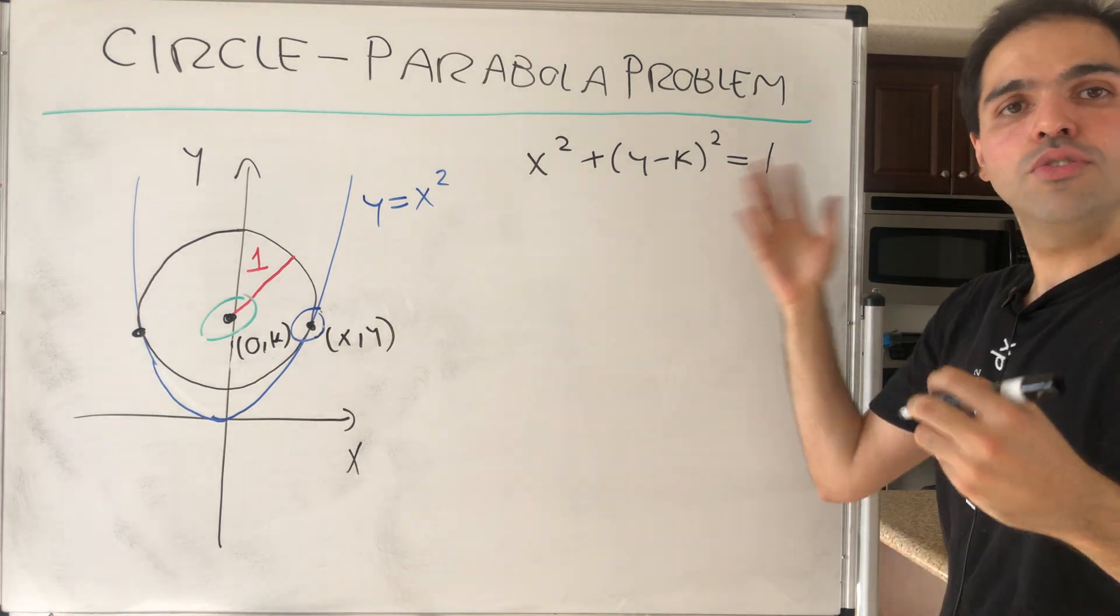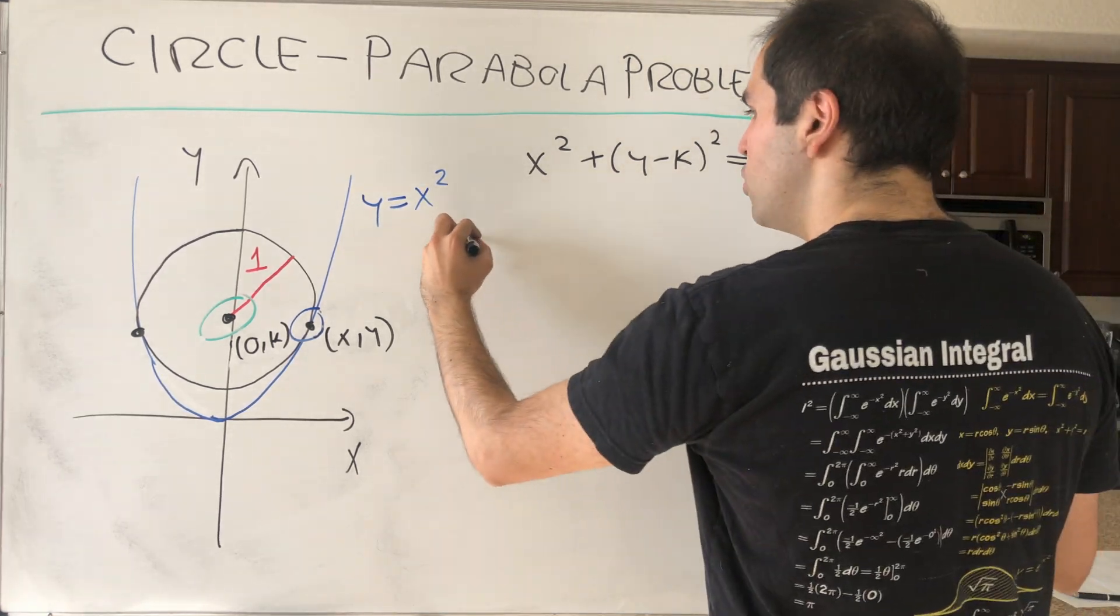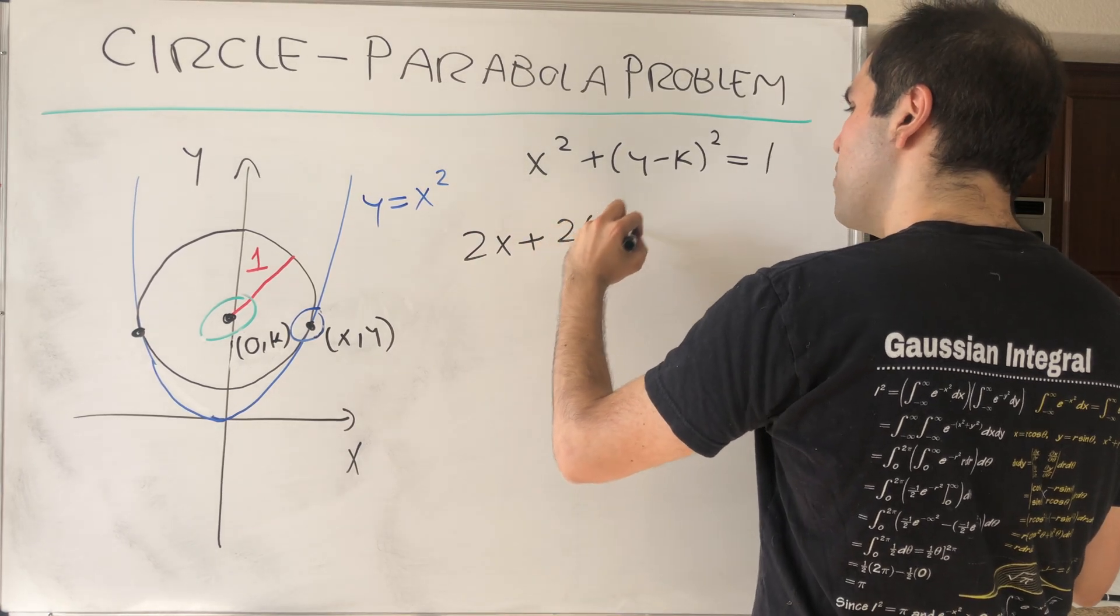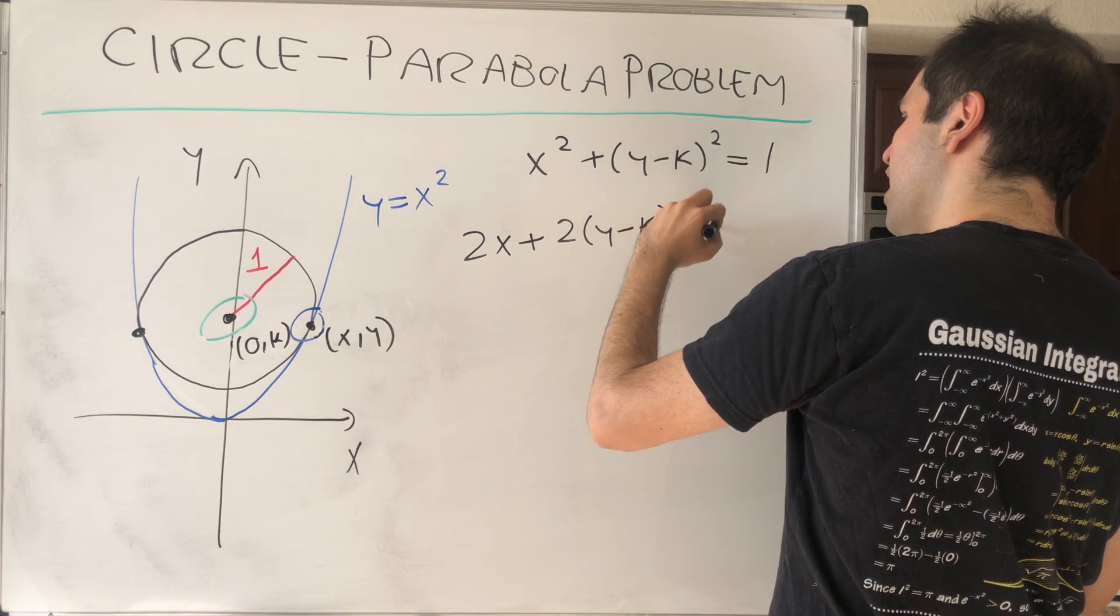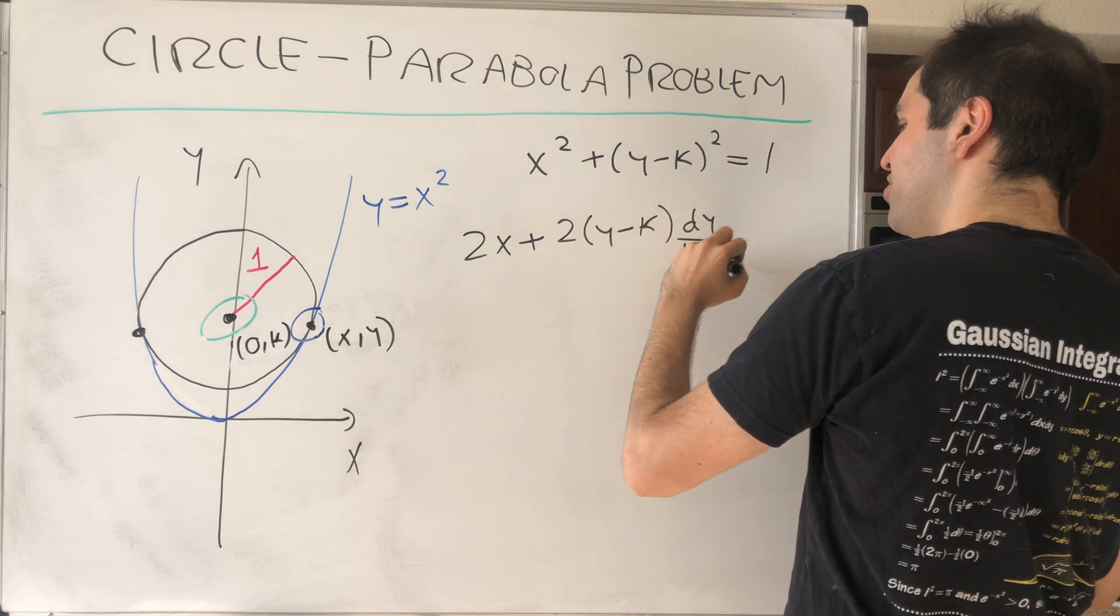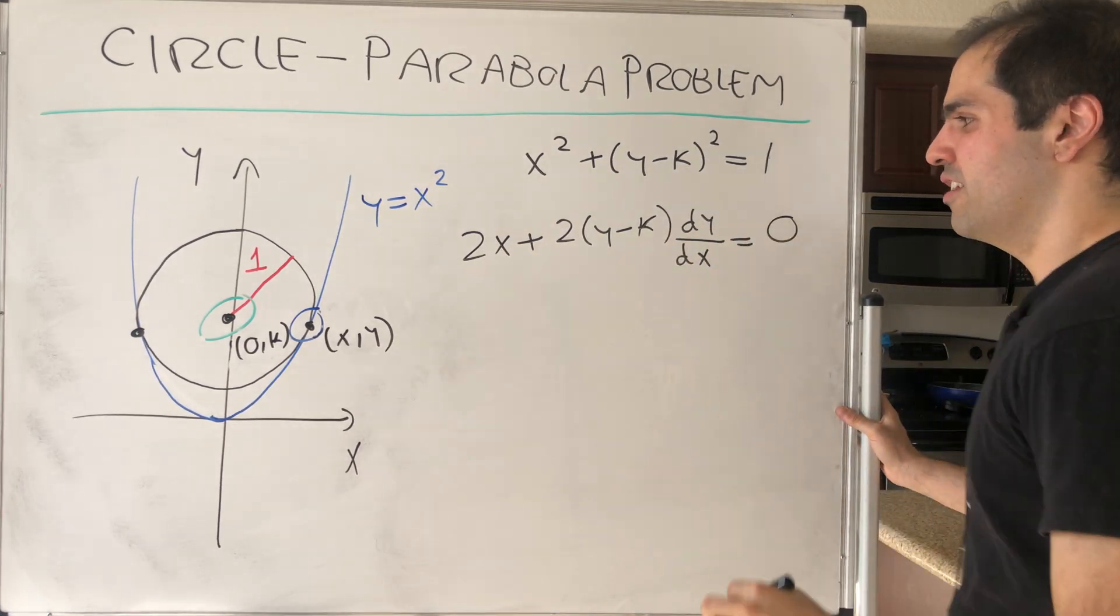And the trick is now to differentiate this. So we get 2x + 2(y - k) dy/dx, some chain rule business, equals 0.